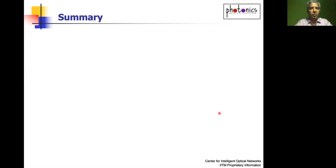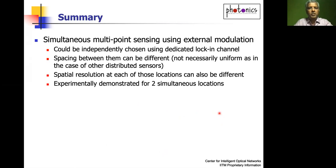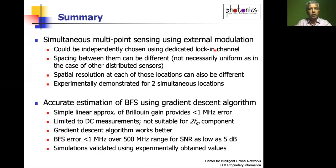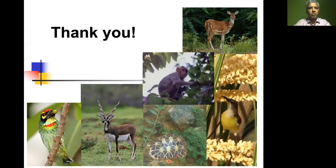In summary, the key takeaways are: first, we can achieve simultaneous multipoint sensing using external phase modulation with dedicated lock-in channels. Second, for accurate BFS estimation, linear approximation deconvolution works under certain conditions, but the gradient descent algorithm works even better — down to signal-to-noise ratios as low as 5 dB — and these results have been validated experimentally. Thank you for your attention. I'm happy to answer any questions.